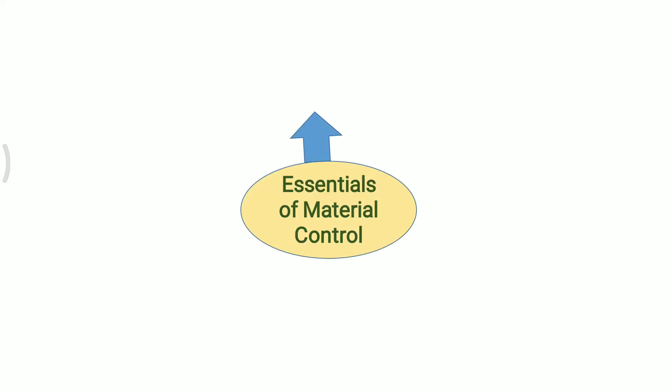The first point of Essentials of Material Control is Coordination. Effective control of material requires effective coordination among the departments involved in purchasing, receiving and inspection, storage, production, sales and accounting departments so that adequate materials are available for continuous production and sales. At the same time, excessive investment in materials and overstocking are avoided.